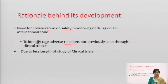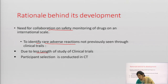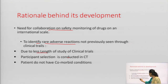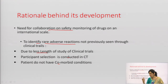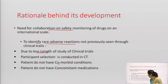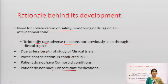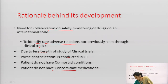Why were adverse reactions not detected during clinical trials? Because there is less length of study in clinical trials, patient selection is conducted carefully, patients do not have comorbid conditions — meaning multiple conditions — whereas in reality patients have many problems. During clinical trials, patients do not take concomitant medications; only one medicine is given. But in actual settings, drugs are given alongside other medicines that patients are already taking.